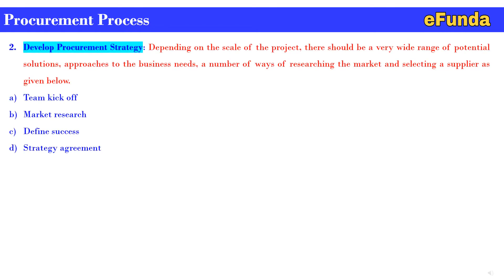Second: develop procurement strategy. Depending on the scale of the project, there should be a very wide range of potential solution approaches to the business needs. A number of ways of researching the market and selecting a supplier are: A. team kickoff, B. market research, C. define success, D. strategy agreement.